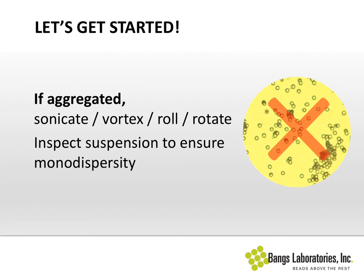If you're opening a fresh bottle of particles and it looks aggregated, it may mean that it froze in transit, in your receiving area, or maybe hit a cold spot in the refrigerator. Once polymer microspheres in particular — but other sorts of microparticles as well — once those suspensions freeze, it's nearly impossible to return the suspension to a monodispersed state. So it's very important to keep particles from situations where they could freeze. If you've had a suspension that hasn't frozen but you've had it in storage for a while and you're seeing some aggregation, it's likely just that particles settled over time or some surfactant migrated to coat the walls of the bottle — a transitory aggregation you can easily treat with sonication or just a couple of hours of rolling.